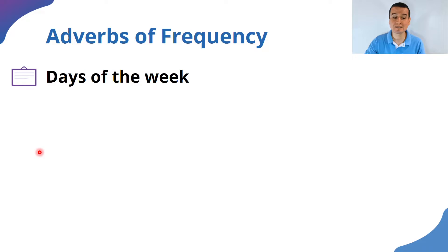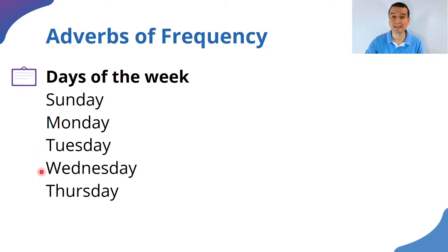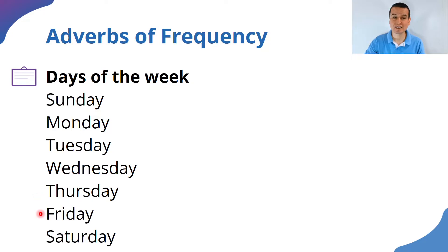Let's practice the pronunciation of the days of the week. The first one, the holiday, is Sunday, Monday, Tuesday, Wednesday — remember that the 'd' and the 'e' are not pronounced: Wednesday. Thursday — that 'u' doesn't sound. Friday, Saturday — that 'u' is not pronounced either: Saturday.